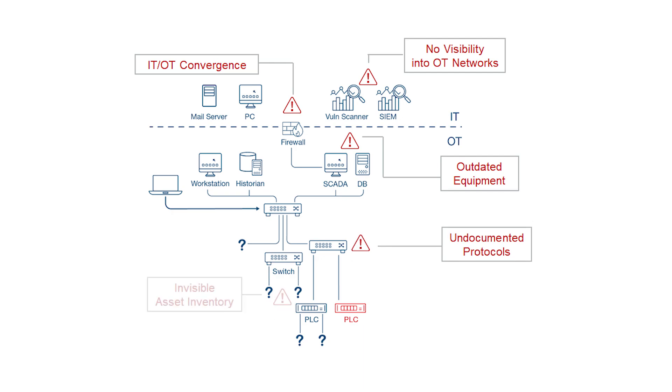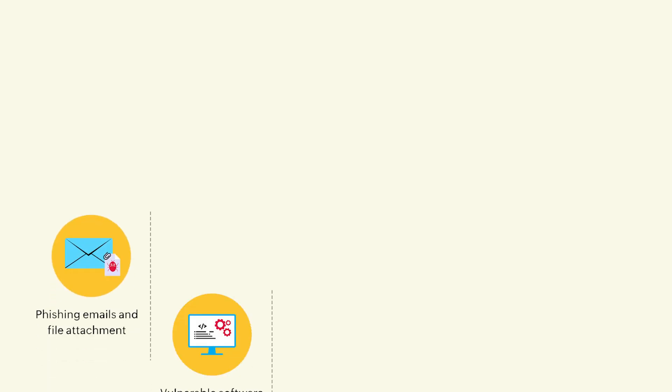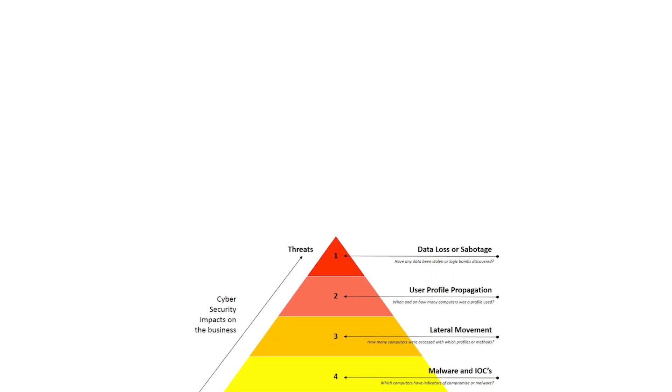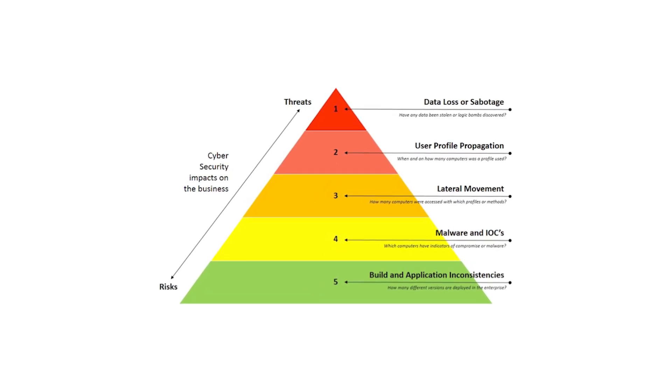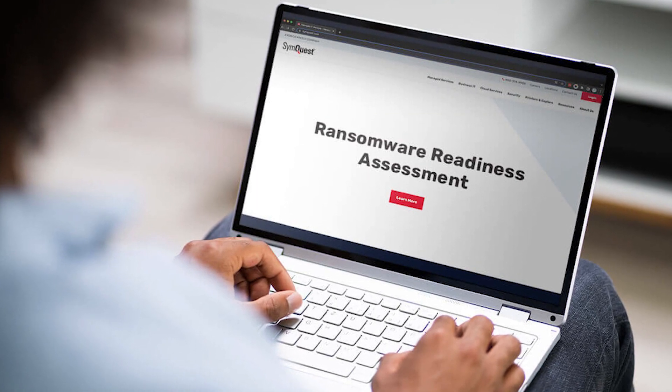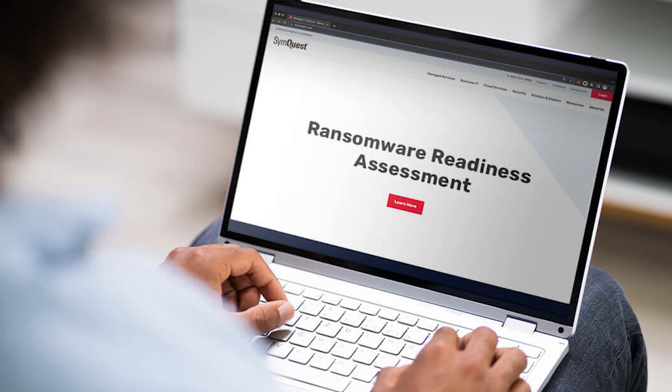One of the first steps in defending against ransomware is to conduct thorough assessments of an organization's vulnerability to such attacks. This involves evaluating the existing cybersecurity infrastructure, identifying potential entry points for attackers, and understanding the organization's risk profile. Regular vulnerability assessments and penetration testing can help identify and patch vulnerabilities before malicious actors exploit them, allowing you to tailor your defenses to mitigate those threats effectively.